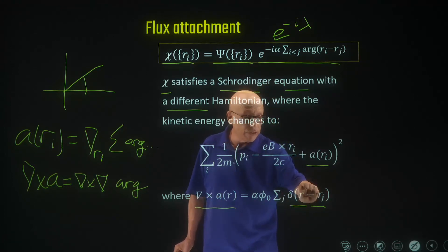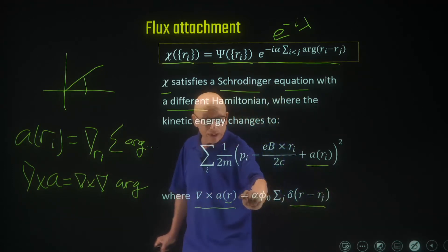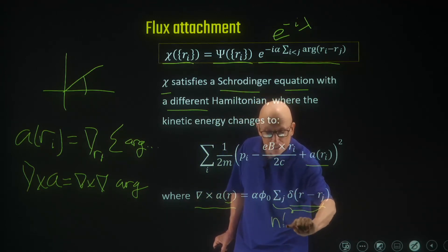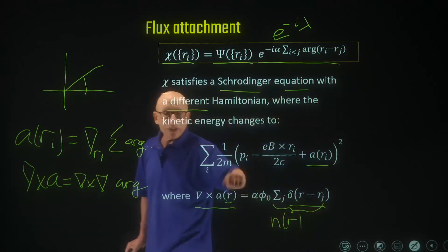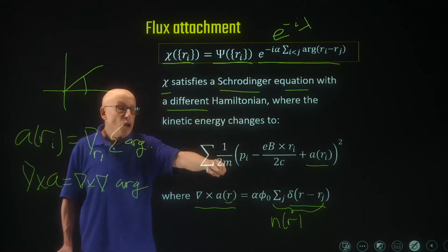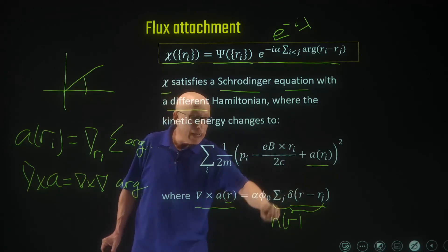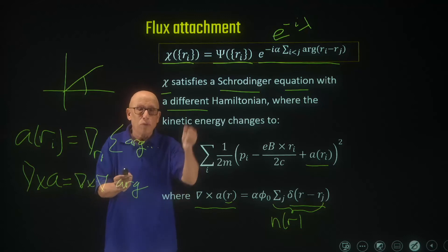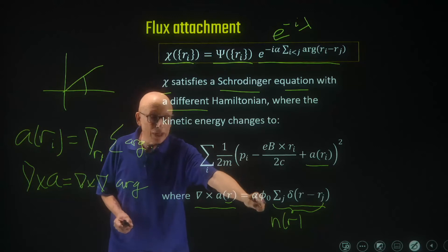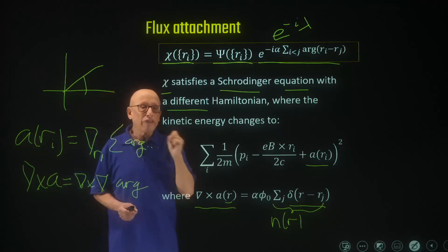These delta functions of the coordinate at which we look for A minus the coordinate of the electrons are just the electronic density at point R. So this procedure introduces a vector potential whose curl is alpha times phi-naught times the density — which is another way of saying that with this transformation we attach alpha flux quanta to each electron. Each electron now carries on its back alpha flux quanta.